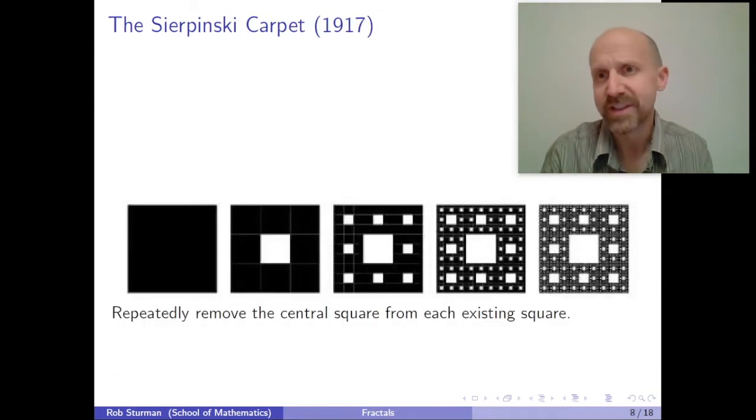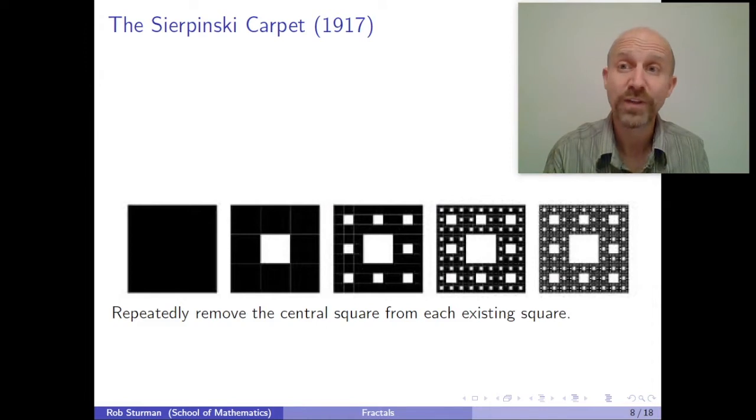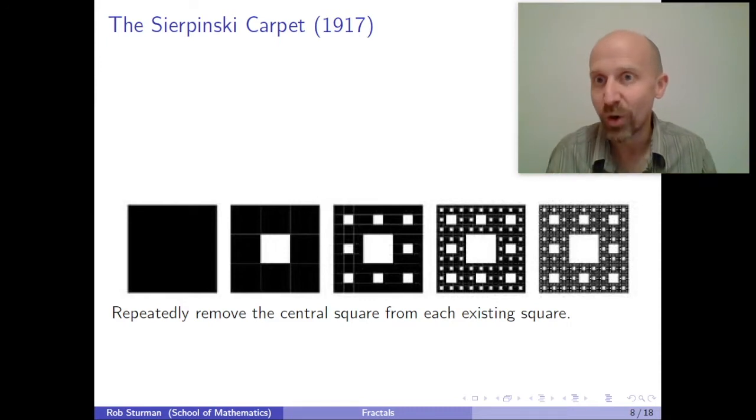Here's a related one. You can see how this is related. The Sierpinski carpet. It's a square version of the Sierpinski triangle. You start with a square and you simply remove the central square. And you do this repeatedly until you get the Sierpinski carpet, which has got infinitely many holes in it of increasingly small size.